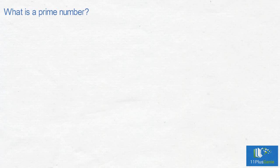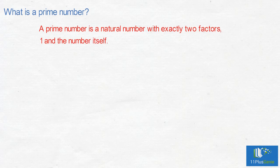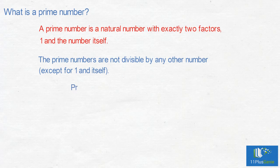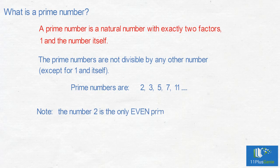What is a prime number? A prime number is a natural number with exactly two factors: 1 and the number itself. The prime numbers are not divisible by any other number except 1 and itself. Prime numbers are 2, 3, 5, 7, 11, and so on. Note: the number 2 is the only even prime number. The number 1 is not a prime number.